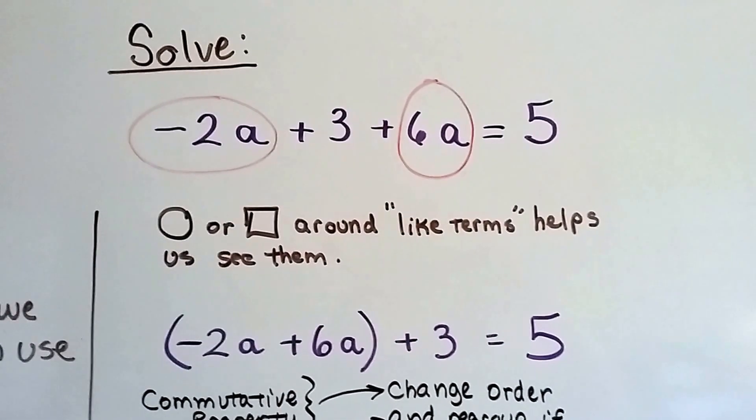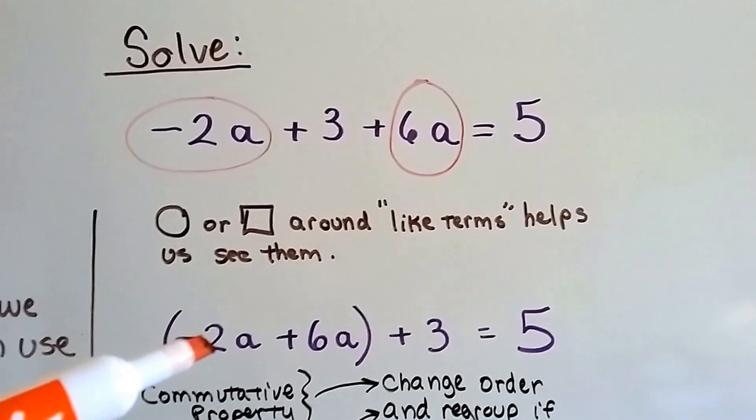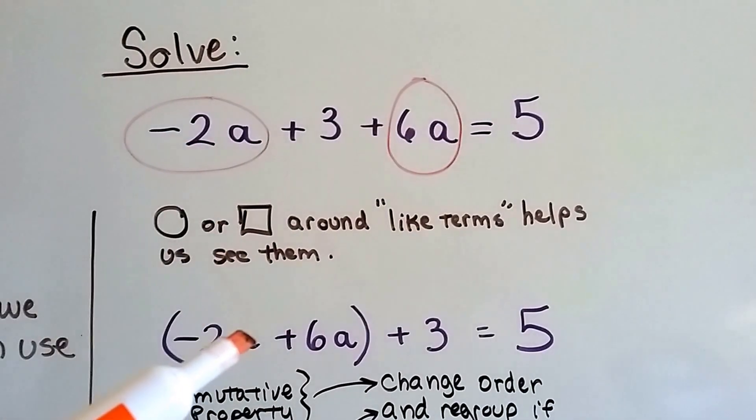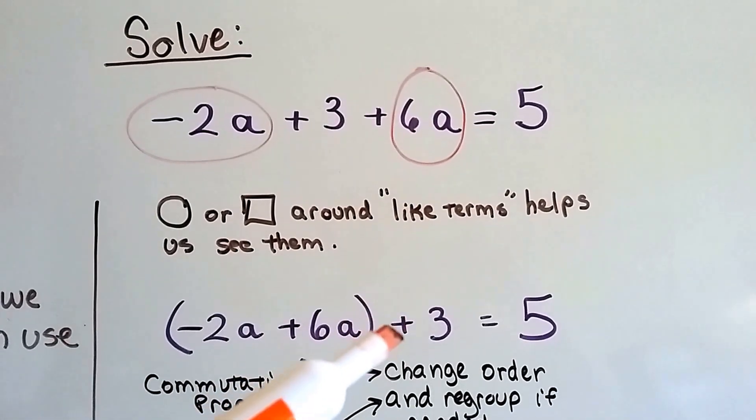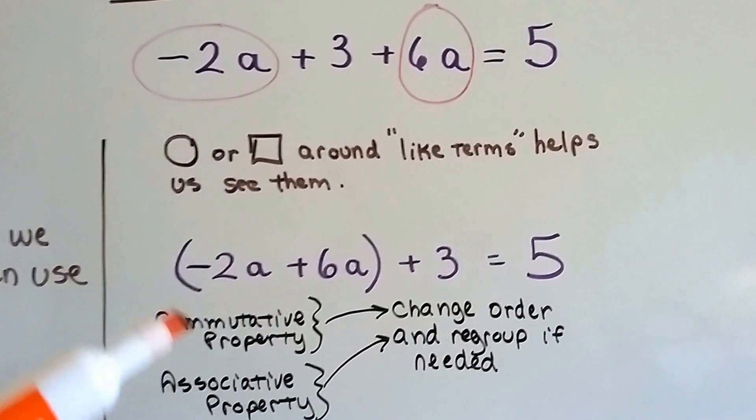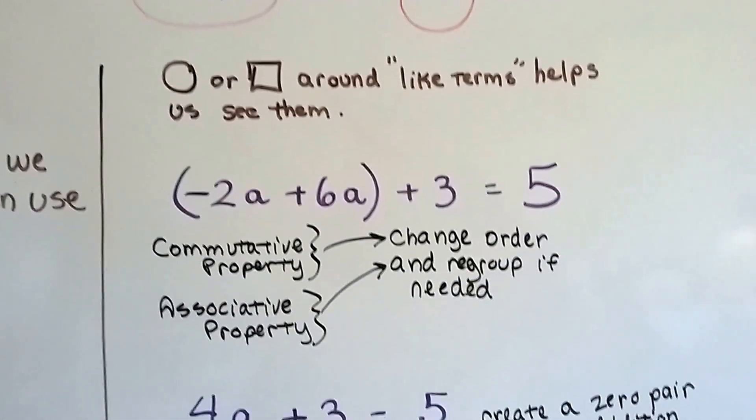So we can regroup this equation as the inverse of 2a plus 6a, and put these two guys together, because they're like terms, and then put the plus 3 out here. The commutative property says that we can change their order, and the associative property says that we can group them like this.